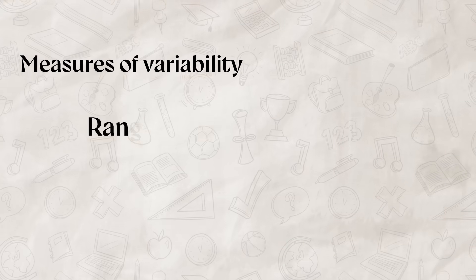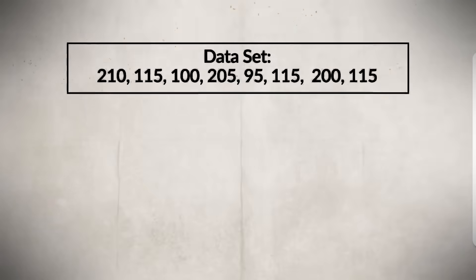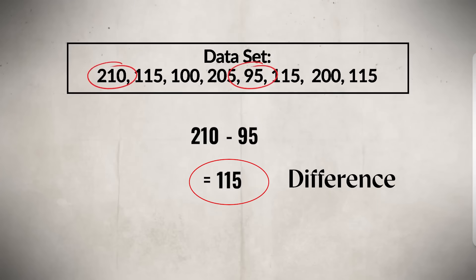All right, so since we started talking about distribution, we need to review measures of variability, which include range and standard deviation. To calculate the range, you need to take the highest value point and the lowest value point and subtract them. Range shows the difference between the two points. Range is affected by extreme scores. Essentially, range is just showing us the span of the data set, allowing you to see how much scores vary.